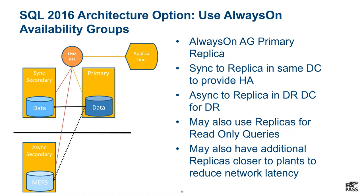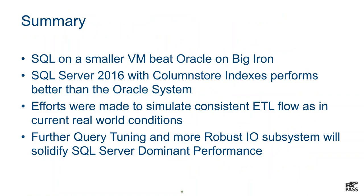In summary: SQL Server on a smaller VM beat Oracle on Big Iron in this particular test. SQL Server 2016 with column store indexes performs better than the Oracle system, even with their in-memory technology. We made efforts to hamper ourselves as much as possible — running ETL and clearing out the cache all the time — and we didn't even get into fine tuning of anything. I really believe this is going to be a serious competitor to anyone running Oracle, especially for a data warehouse. This thing is just going to smoke.